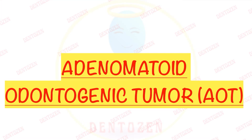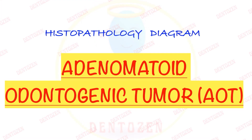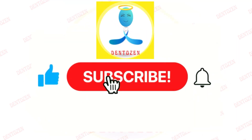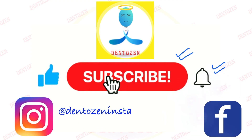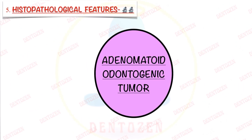Hi everyone, welcome back to Dentizen. Today we are going to learn how to draw a histopathology diagram of Adenomatoid Odontogenic Tumor, also known as AOT. Before we begin, I want you to quickly subscribe to Dentizen if you have not done that till now, and also hit the bell icon so that you remain notified about new videos.